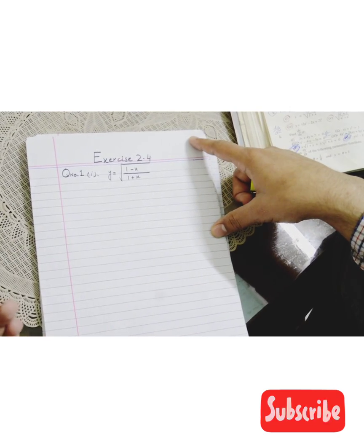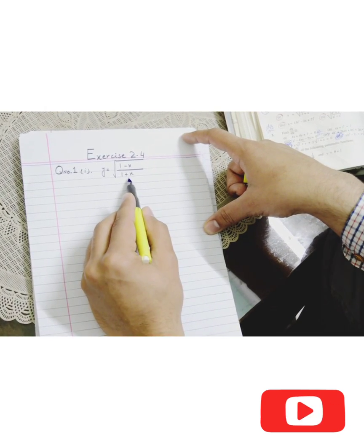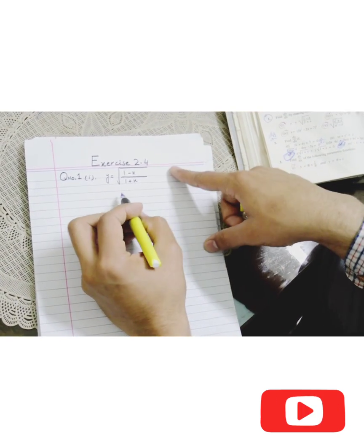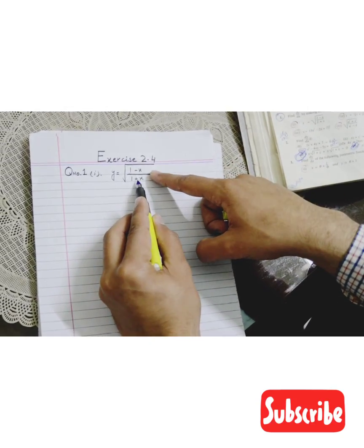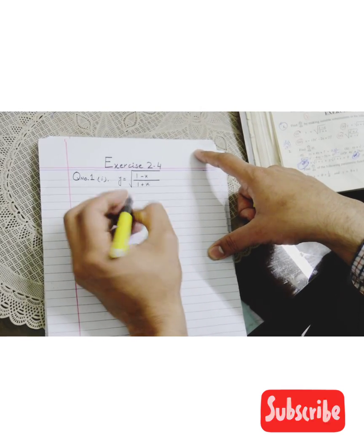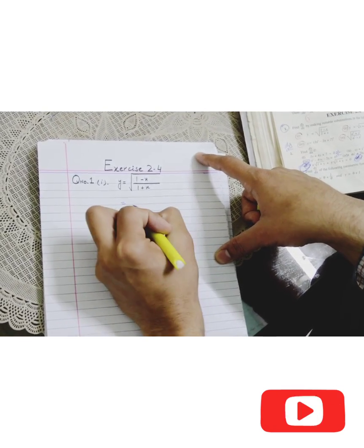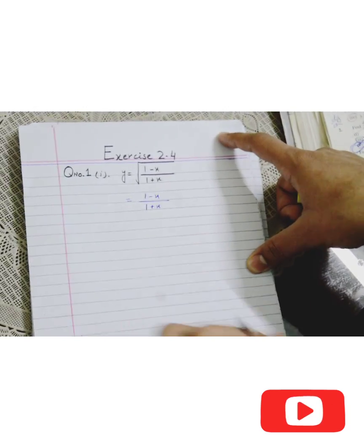We will put a chain rule here. The chain rule is this way. This is the question. Y is equal to, this is the question. Now we have to do this. Under root of the inside, what is this? (1-x)/(1+x), under root of (1-x)/(1+x).